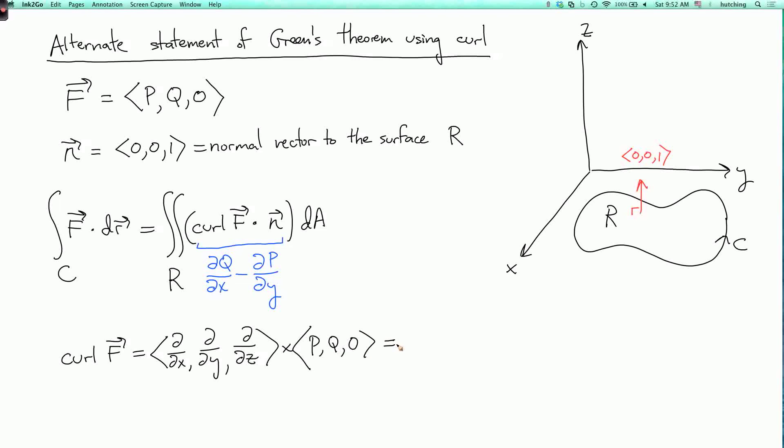Now, the normal vector n only has a non-zero component in the z direction. So when I calculate this dot product, I only care about the z component of curl. So, the x component is whatever, I don't care. And then the z component is d/dx of Q minus d/dy of P. So when you dot product this with (0,0,1), you get the usual integrand from Green's Theorem.